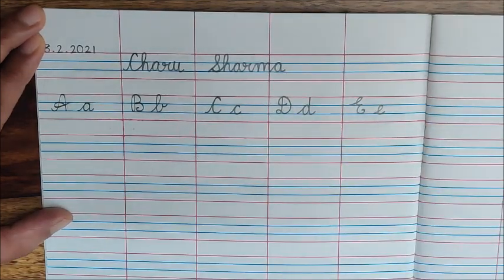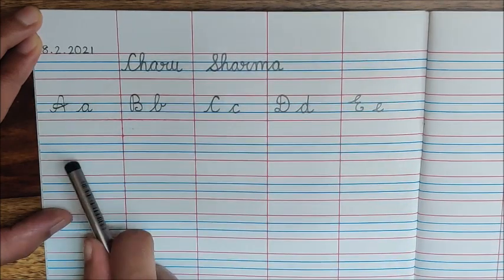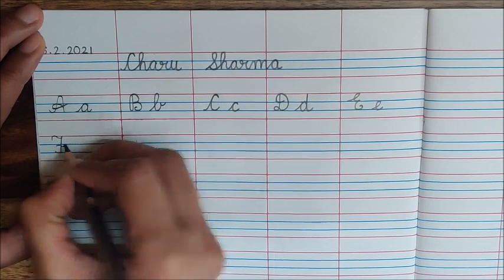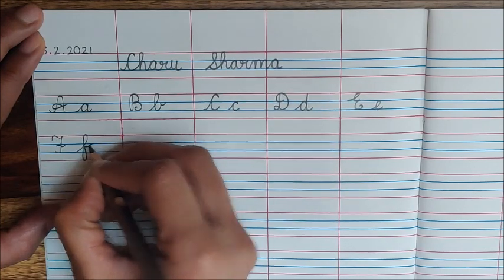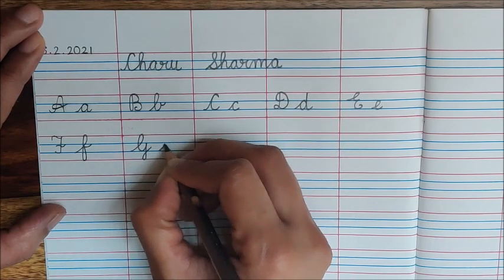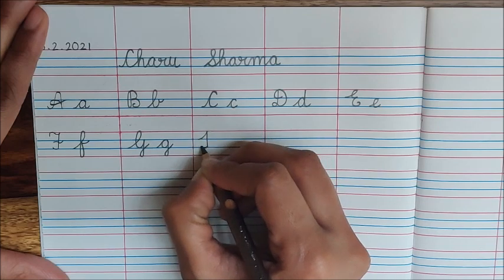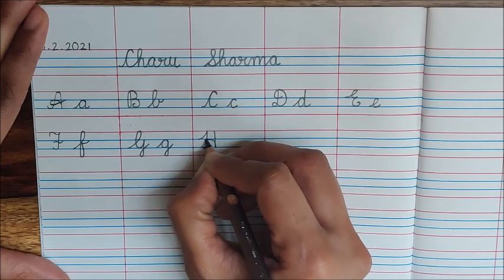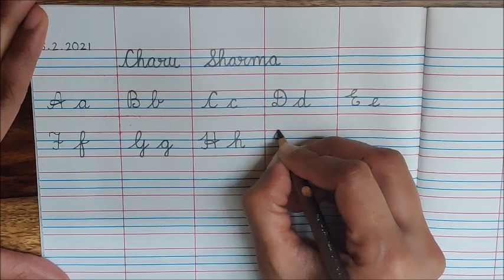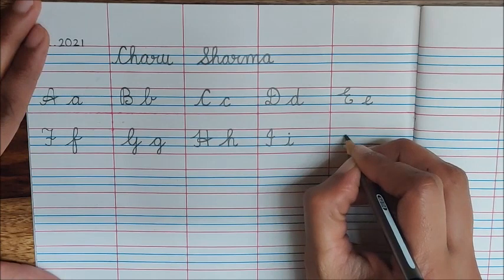What comes after E children? A, B, C, D, E, F. So write down here. F. What comes after F? G. Then H. I. J.